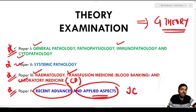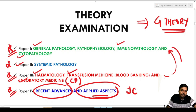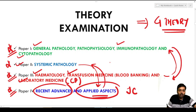This is a rough division of subjects, but there is always some overlap. For example, questions from paper three might be asked in paper one, or cytopathology questions may appear in paper three. Questions from paper two might be asked in paper four and vice versa. This overlap is always present between the different papers. It is very important to pass all four papers individually.